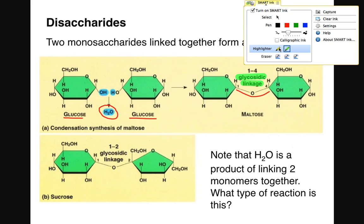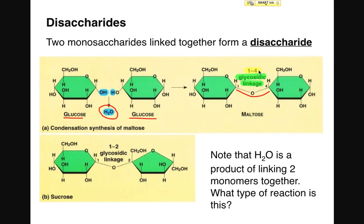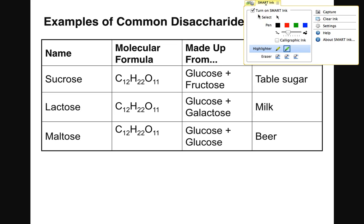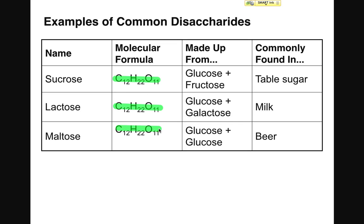The numbers you see refer to the carbon atoms in each monosaccharide being linked — for example, a 1,4 linkage or a 1,2 linkage. Focus instead on the fact that a new chemical bond forms between the two monosaccharides, called a glycosidic bond. There are three types of disaccharides to be familiar with: sucrose, lactose, and maltose. All three share the same molecular formula, suggesting they have different structural formulas — making them structural isomers of each other.